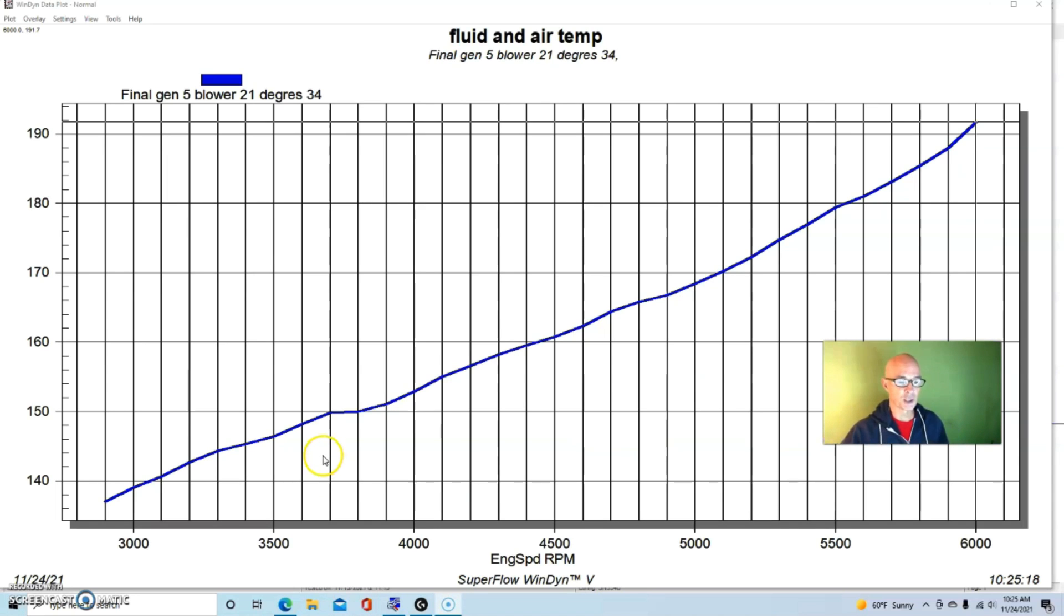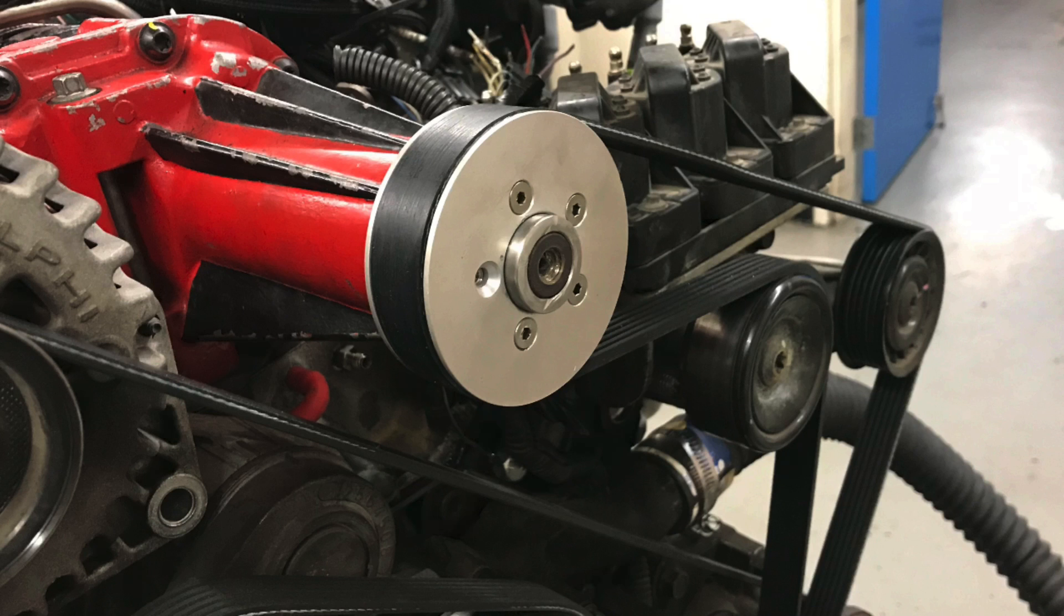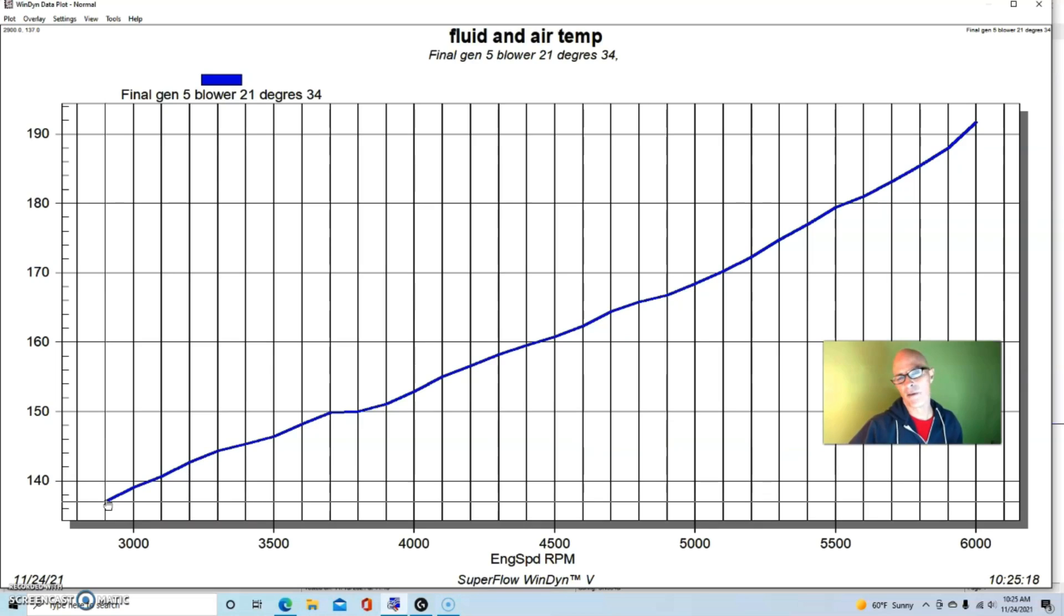First, looking at the charge temperature, this is our charge temperature curve with no water meth, just the 3.2 inch pulley on the Gen 5 blower on our 3800. It rose to a peak of about 14.8 pounds and starting about 8.2 or 8.3 pounds down here at the bottom. But the associated charge temperature with that run started out at 137 degrees and then rose to a peak of 192.